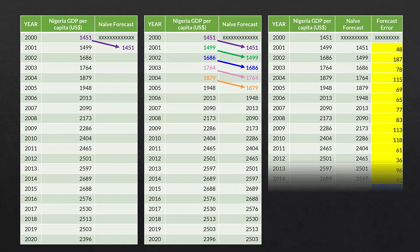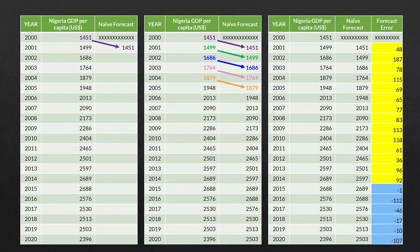Then we figure out our forecast error, which is just the actual value minus the forecast value. For example, in the year 2003, the actual value was $1,764, the forecast was $1,686, and the difference was $78. So it's just actual minus forecast to get our forecast errors.